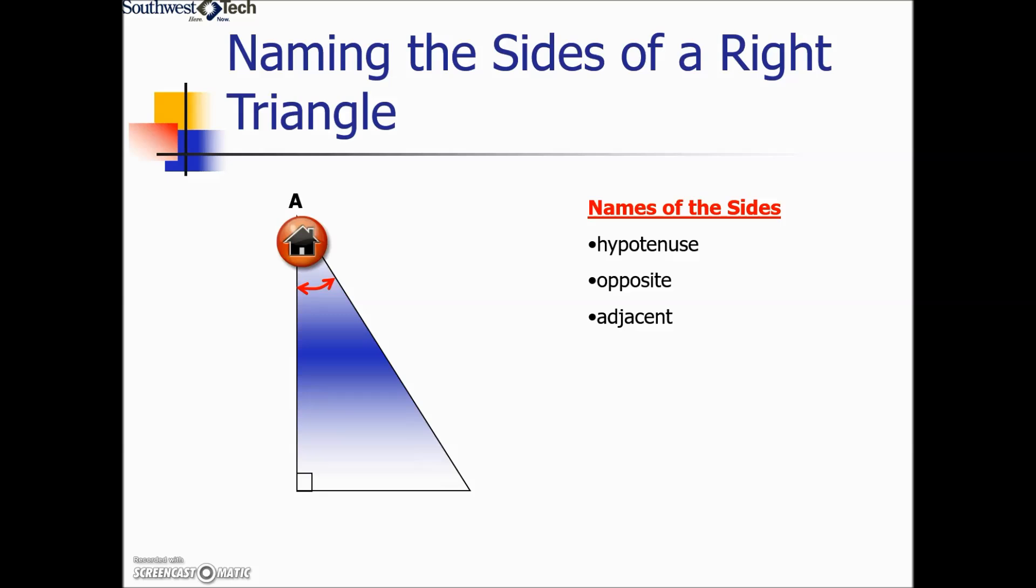If we start with A as a reference angle, the next step is to identify the opposite side. It is located directly opposite the reference angle.